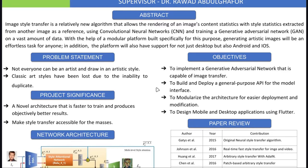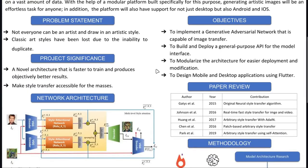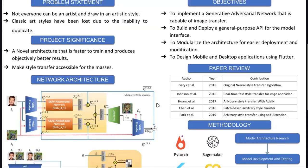This platform will make duplicating old art styles easier. The objectives are: to implement a GAN capable of image style transfer, to build an API to interact with the model, and to modularize the architecture for server deployment with minimal computational resources. The final objective is to design a mobile application using Flutter, which will also be used for the desktop application and possibly the website. The project significance is that it proposes a novel architecture that is faster to train and produces objectively better results, making style transfer accessible to everyone.